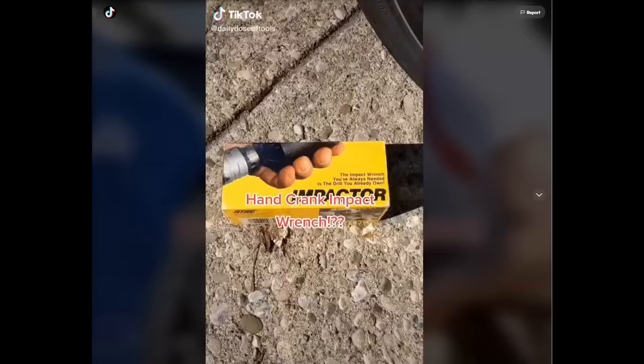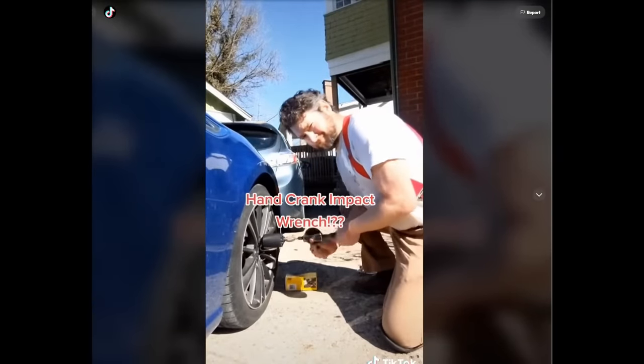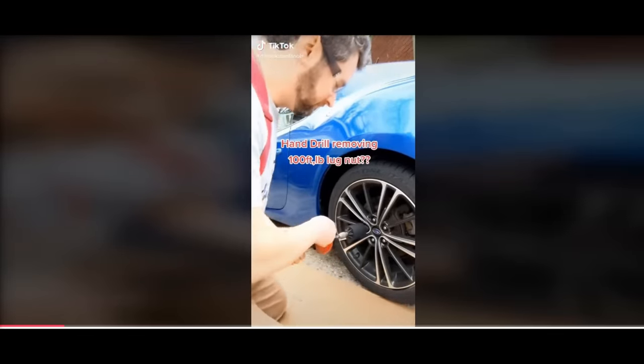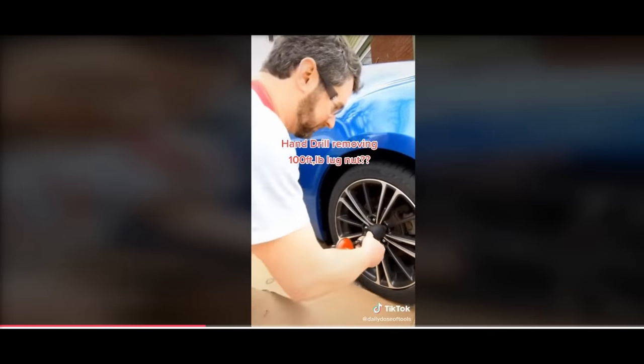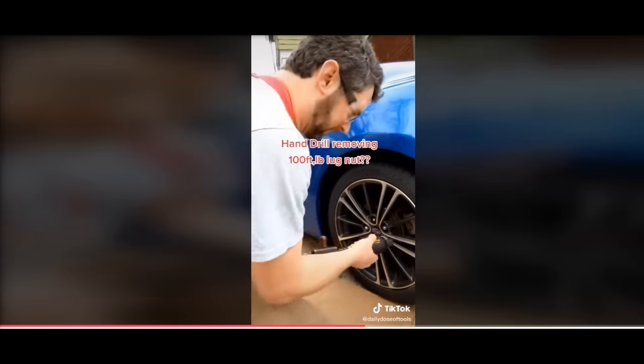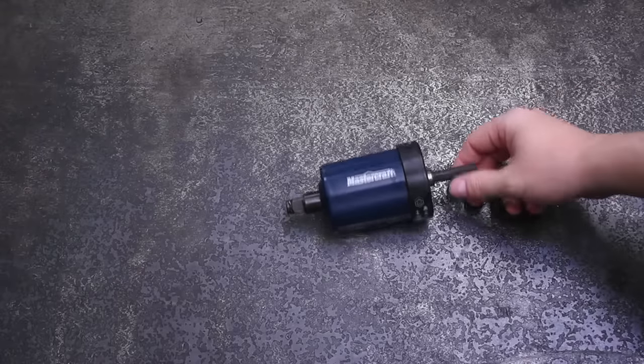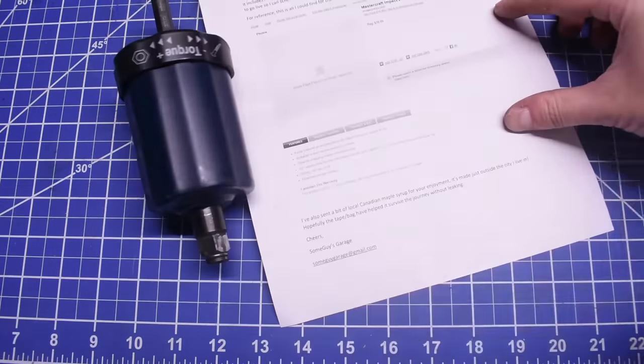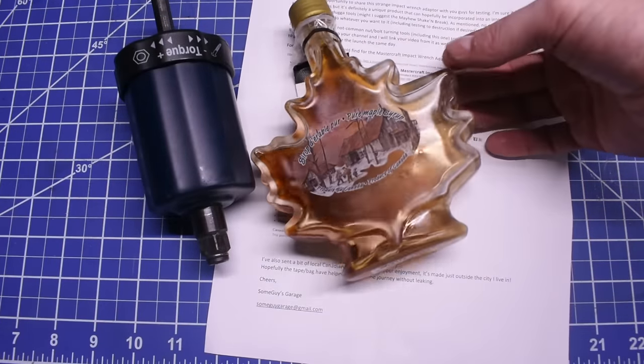Moving on to this little tool. The impact wrench you've always needed is the drill you already own. It's an adapter that turns a drill into an impact wrench, to the effect that a hand drill can remove 100 foot-pound lug nuts. Or so it would seem. This particular one is made by Mastercraft, which is sold in Canada, which means ours was provided by a genuine Canuck in the form of YouTuber, Some Guy's Garage, a channel I watched before this exchange. And you can tell he's a genuine Canadian because his package came with an authentic bottle of maple syrup, which the daughter extra appreciated.